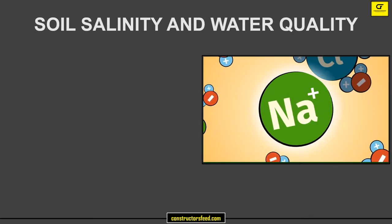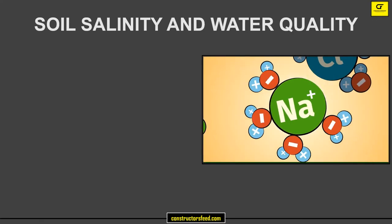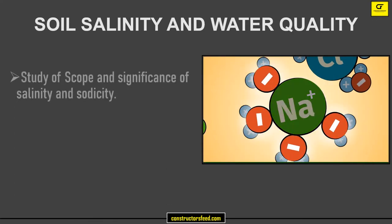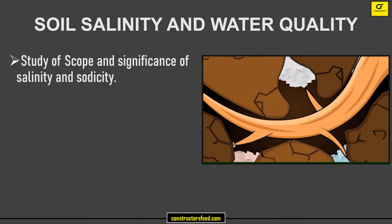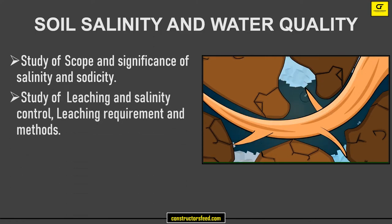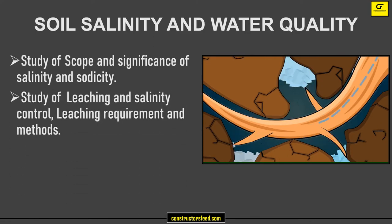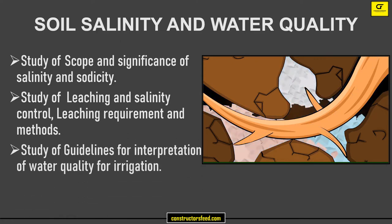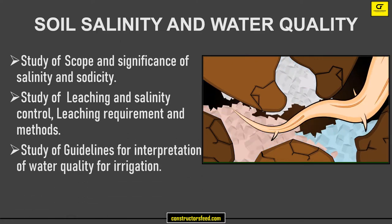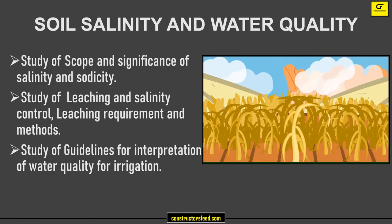Soil Salinity and Water Quality: Study of Scope and Significance of Salinity and Sodicity, Study of Leaching and Salinity Control, Leaching Requirement and Methods, and Study of Guidelines for Interpretation of Water Quality for Irrigation. These are the reference books.